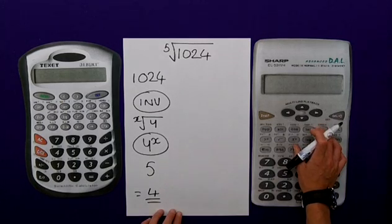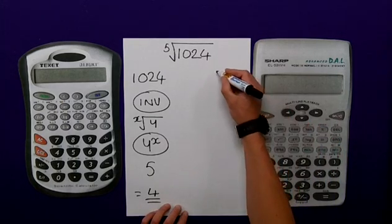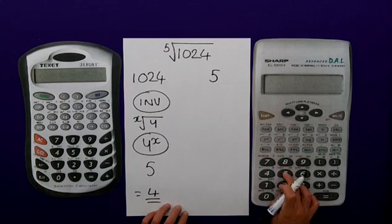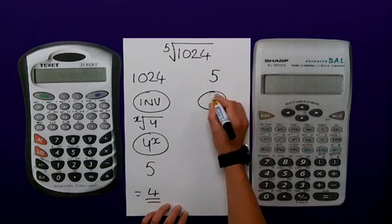Now the calculator on the right hand side is slightly different. The first thing I would do is type in the 5. I'd then press the second function button.